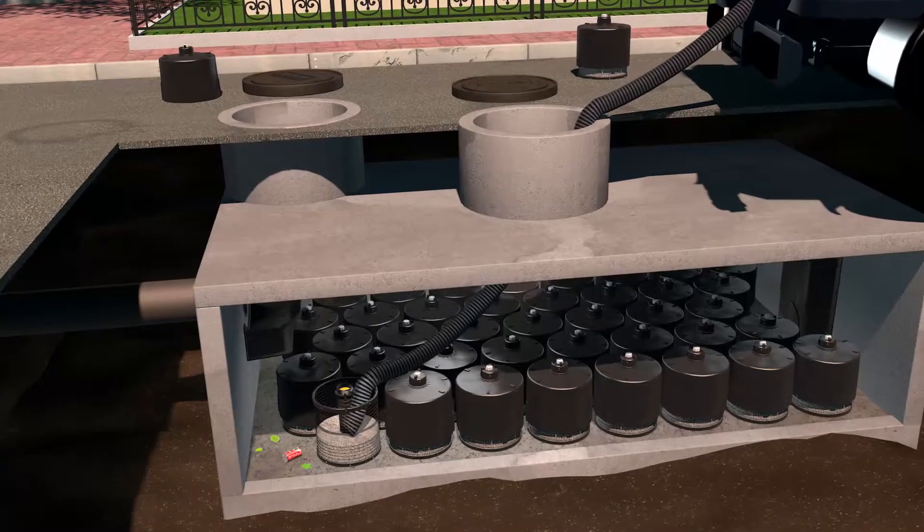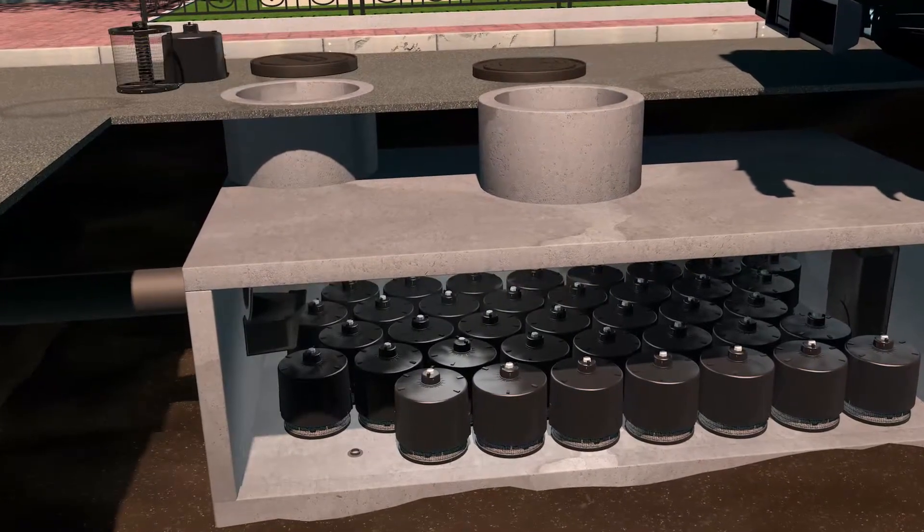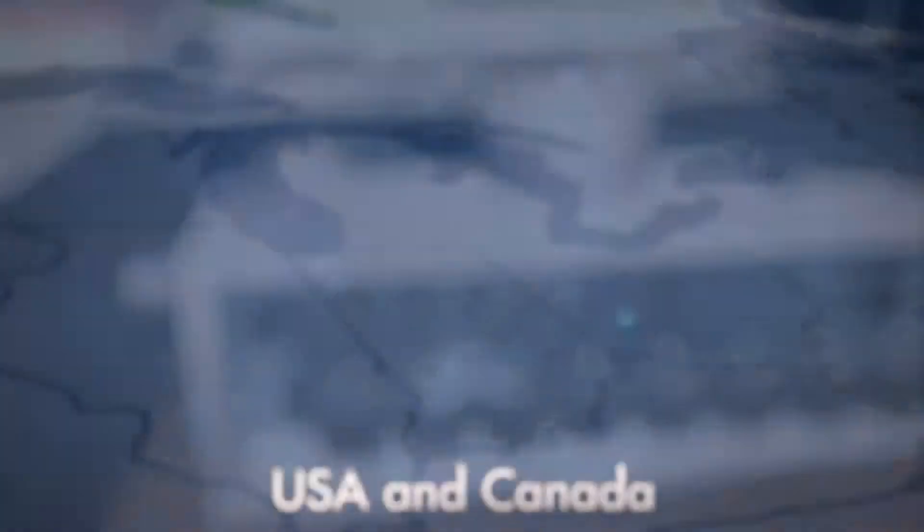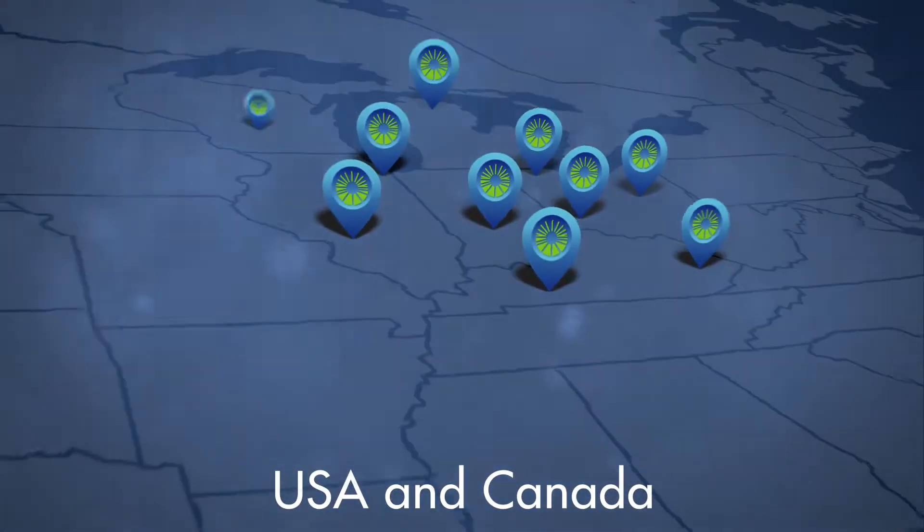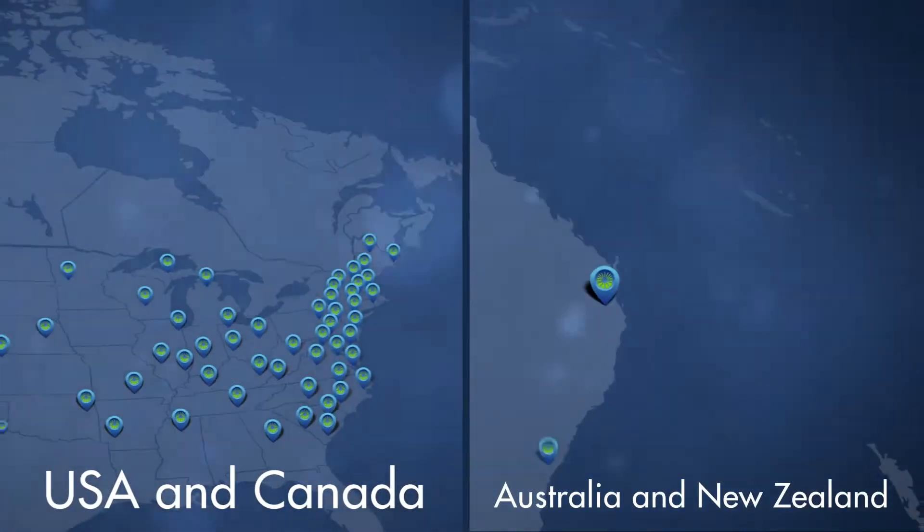All storm filter structures provide access for inspection, media replacement, and washing of the structure. With over 150,000 cartridges in use and performance verified by multiple regulatory agencies.